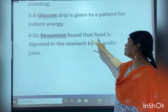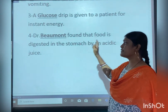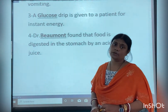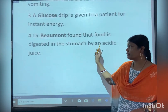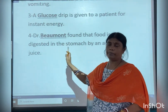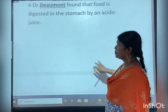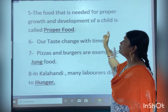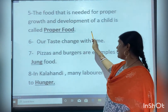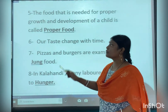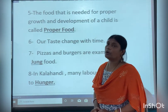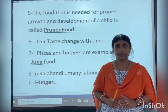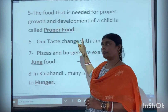Dr. Bauman found that food is digested in the stomach by an acidic juice — for the first time, Dr. Bauman found this out. Then, number five: the food that is needed for proper growth and development of a child is called proper food. Proper food is very important for our growth.